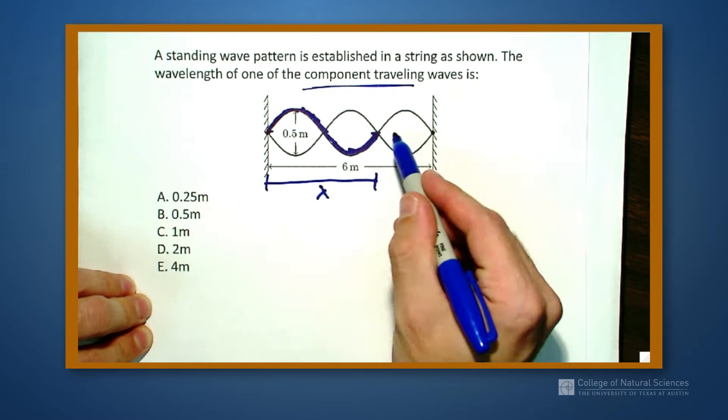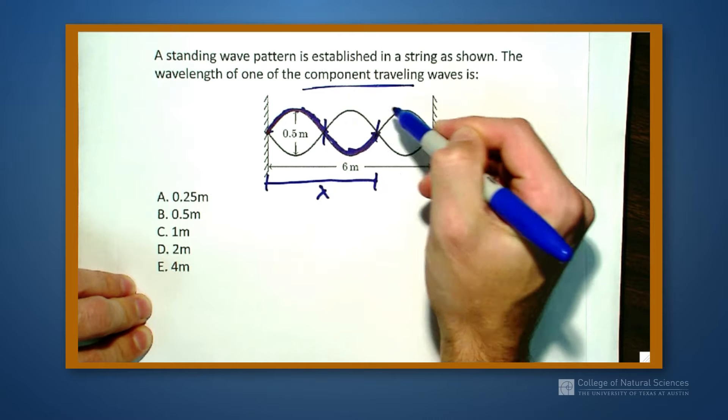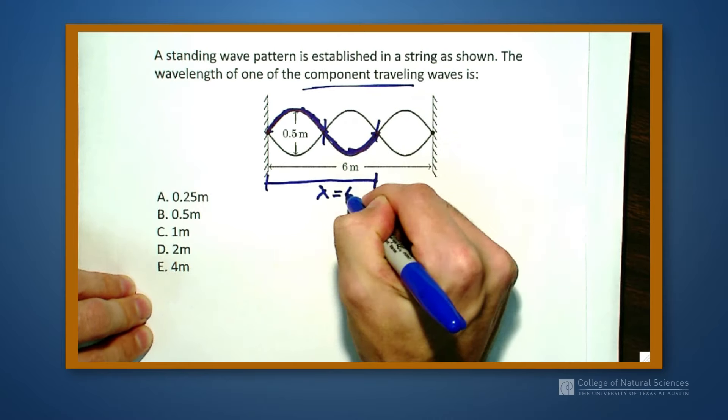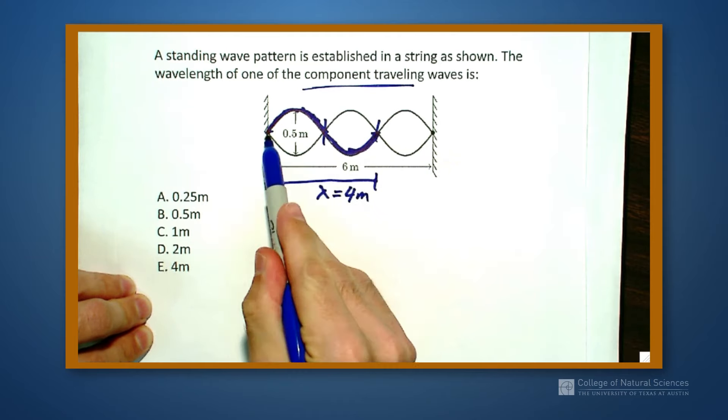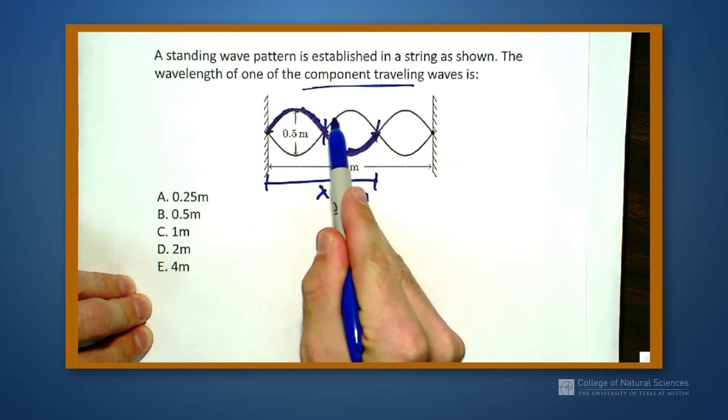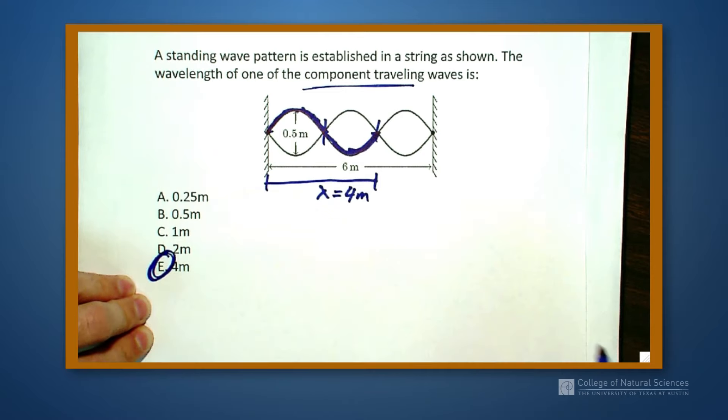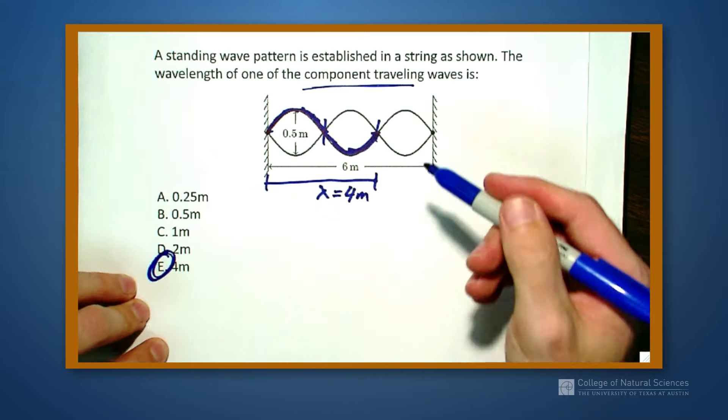So if I have that this is six meters, that means each of these spots is two meters, which means that the wavelength is equal to four meters. Two meters for a half wavelength, another two meters to do the full wavelength. So our correct answer is four meters. There's another way to do that,